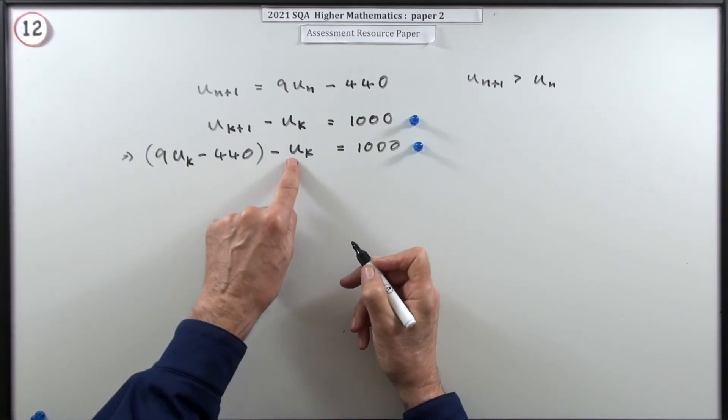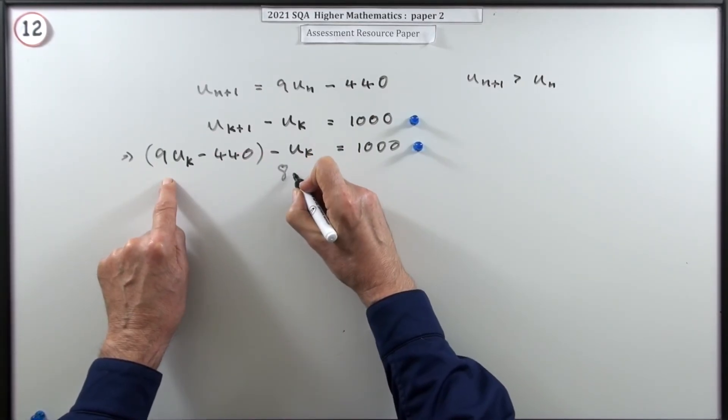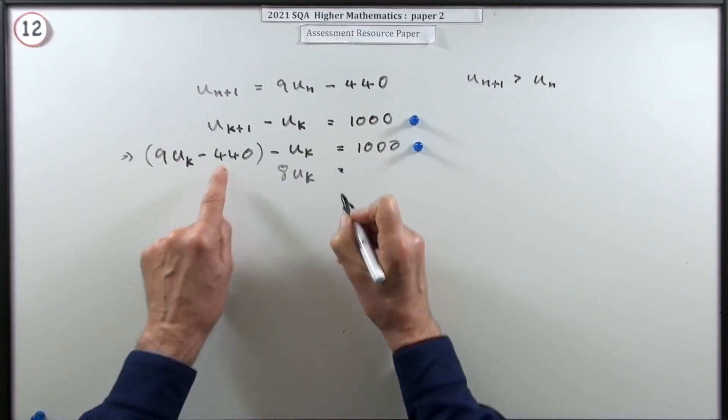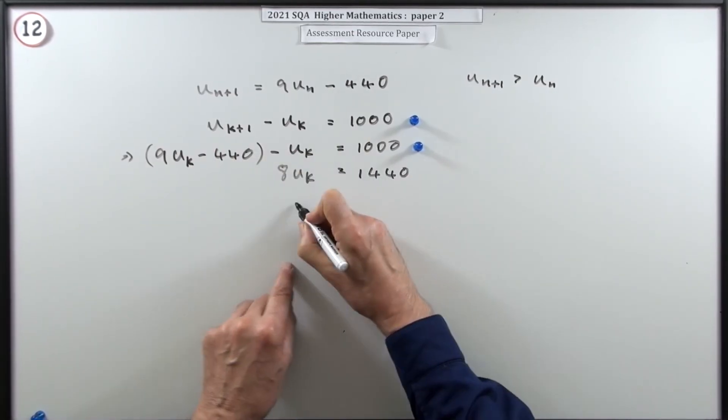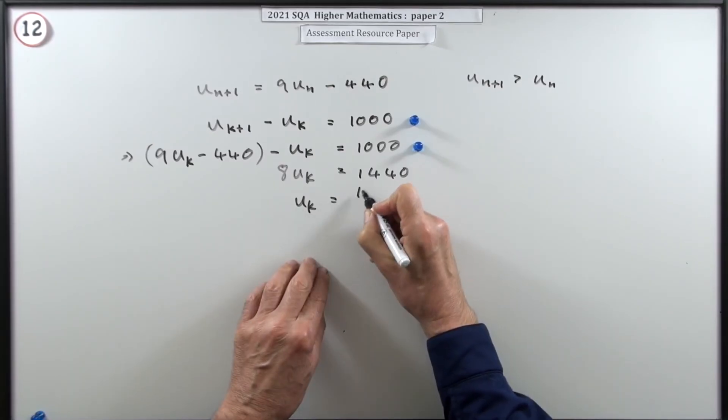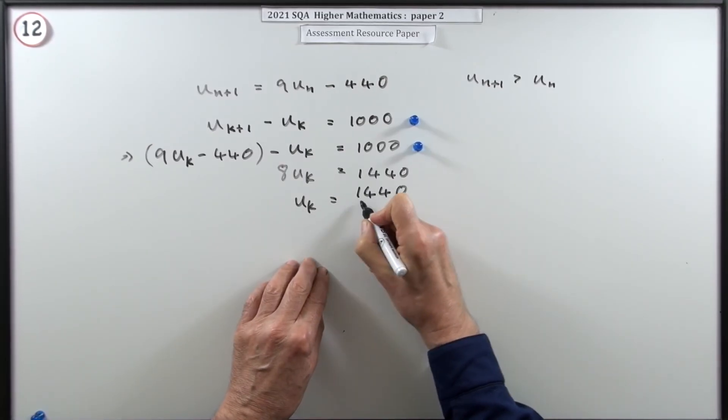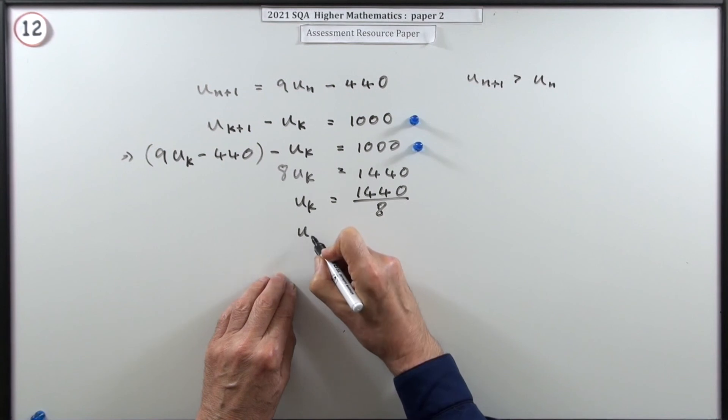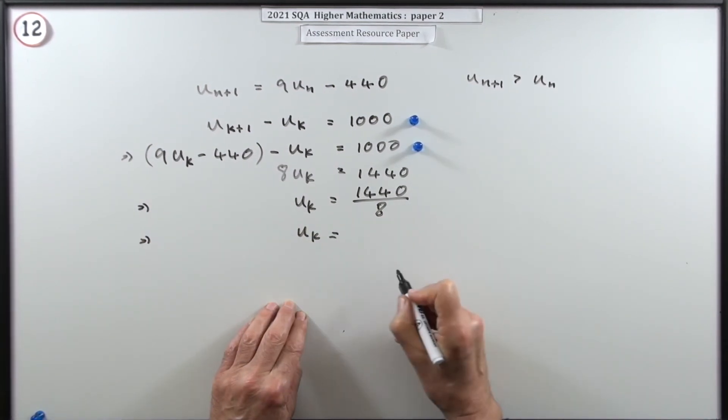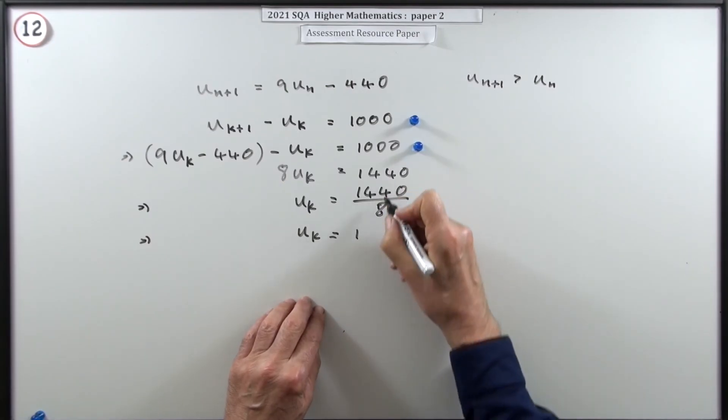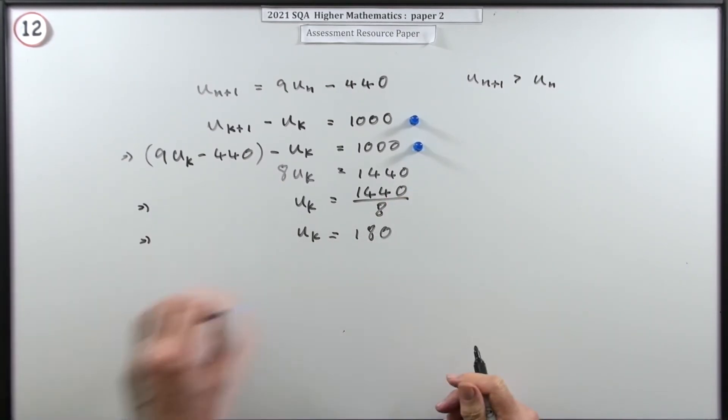And then when you solve that, well that leaves eight. You've got eight lots of U_k that'll come across and add and make 1440. So here's U_k. U_k is going to be 1440 upon eight. And then eight goes into that, that's 64, 180 times. So U_k must be 180.